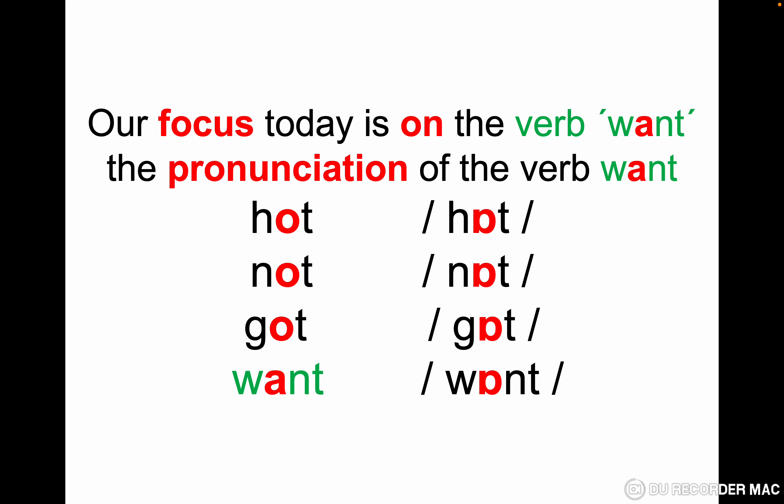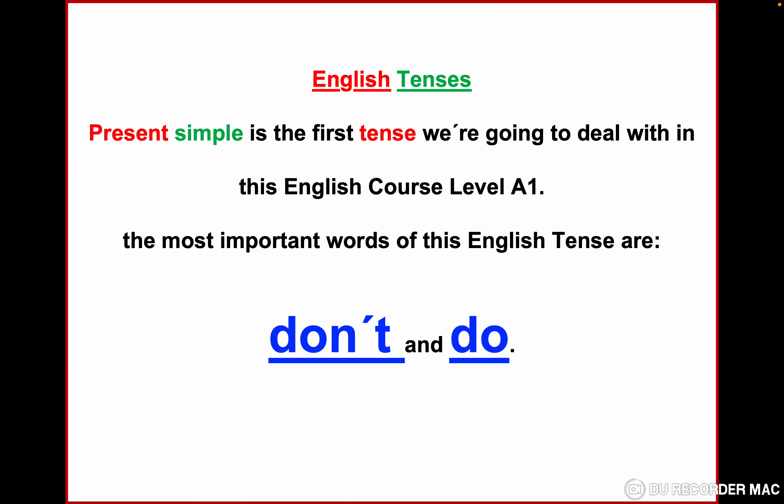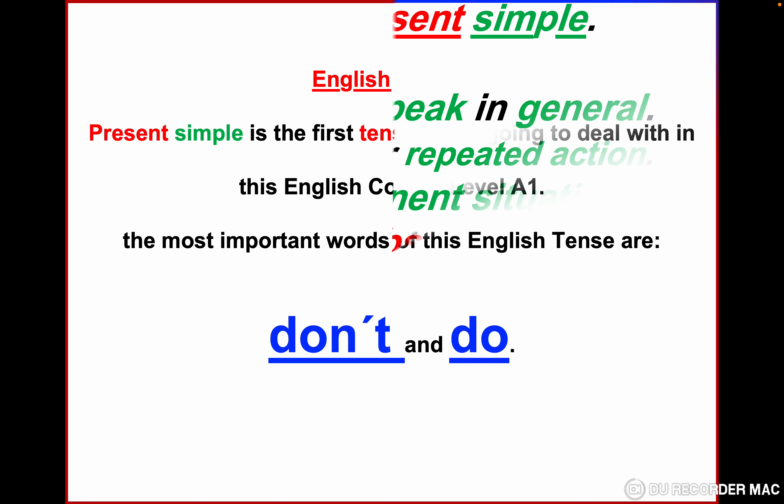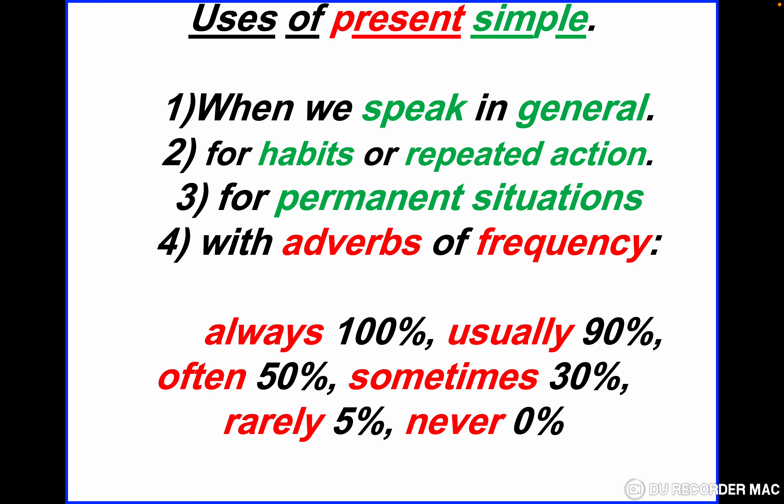In this lesson we are going to practice this verb a lot to master it. It is pronounced 'wont'. Let's continue. English tenses: Present Simple is the first tense we're going to deal with in this English course, Level One A1. The most important words of this tense in this lesson are 'don't' and 'do', and we are going to practice them today.